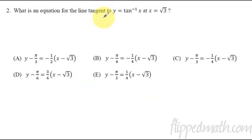Number 2. What is an equation of the line tangent to y equals tan inverse at x equals square root of 3? So what is the equation for the tangent line? If we look at all these answers, you can see it's y minus y1 equals the slope. So we're trying to find y minus y1 equals the slope times x minus x1.